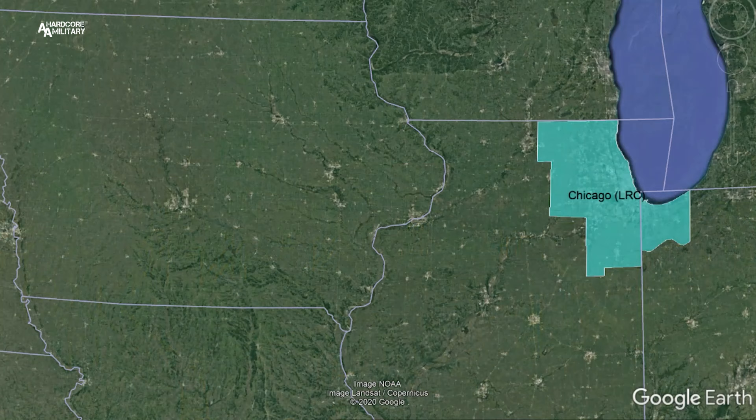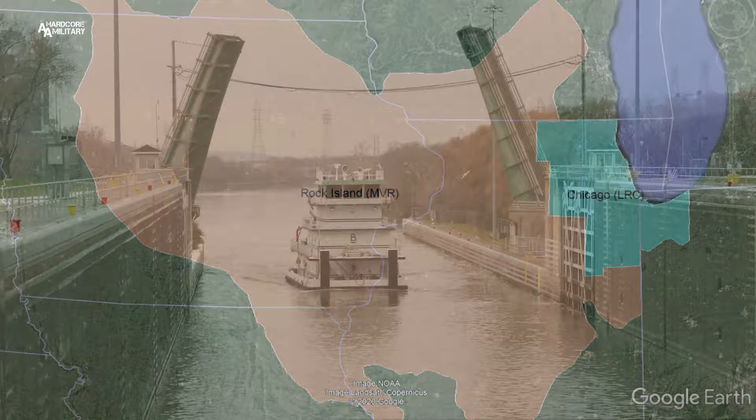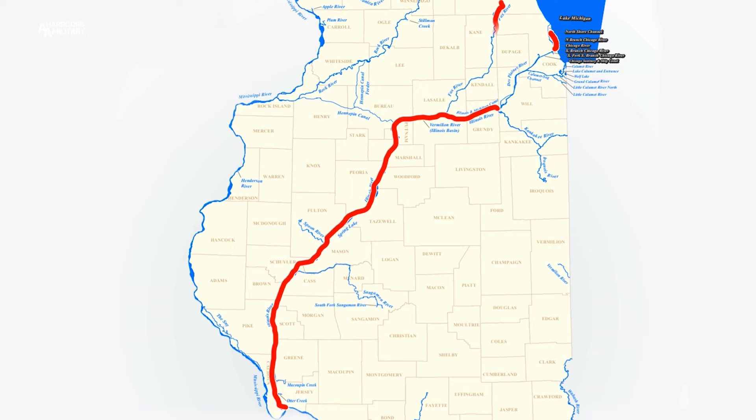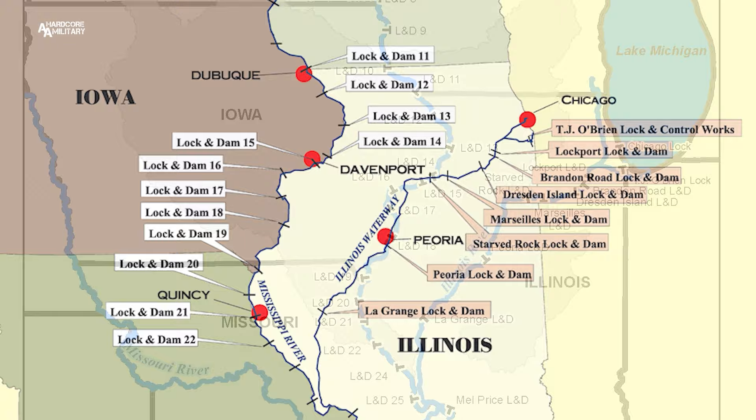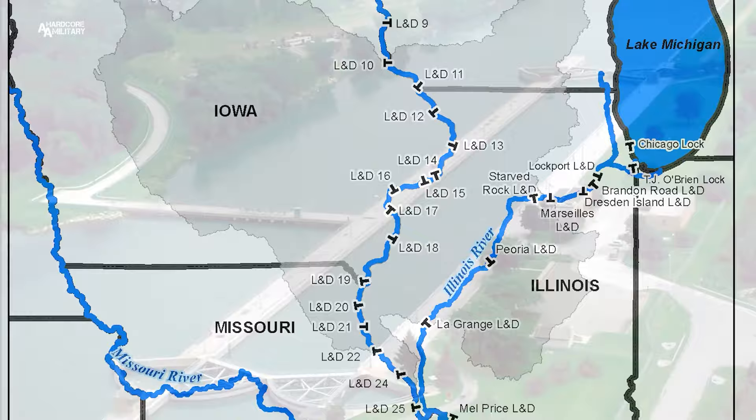In 1980, as a result of a corps-wide district realignment study, all river-related responsibilities of the Chicago District were transferred to the Rock Island District. This change brought six rivers — the Illinois, Chicago, Fox, Des Plaines, Kankakee, and Sangamon — as well as eight locks and dams on the Illinois waterway to the Rock Island District. Years later, in 2020, another realignment would transfer operations of the TJ O'Brien and Lockport locks and dams back to the Chicago District.